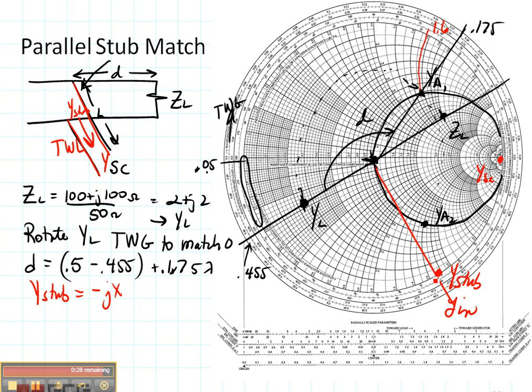And then I'm going to rotate towards the load, the load of the stub, to Y short circuit. Y short circuit is over here. So let's rotate towards the load this distance right there. And we can read that: L is equal to 0.25, my final destination, minus the value that's right there, which is about 0.165 wavelengths. So that's my distance L.